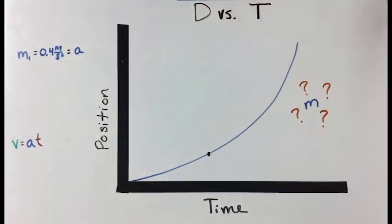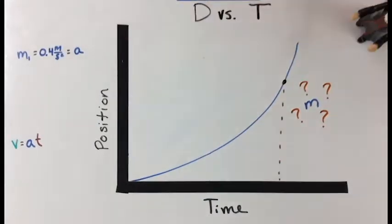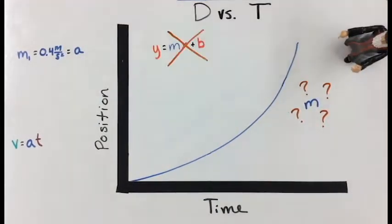On our next graph, we have position versus time. If we look at our graph, we see that the slope is changing and the data is not linear.